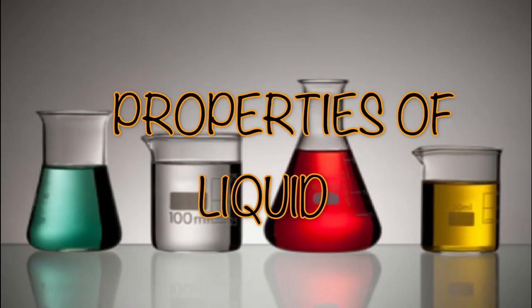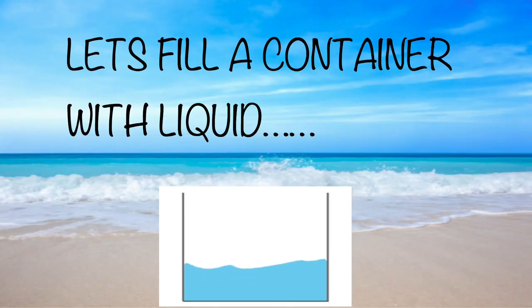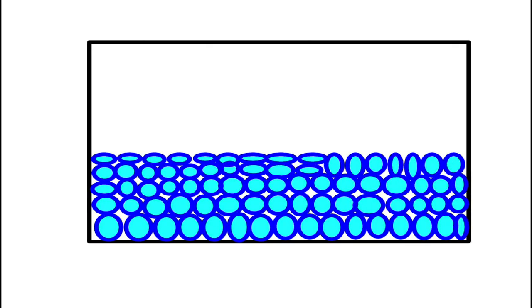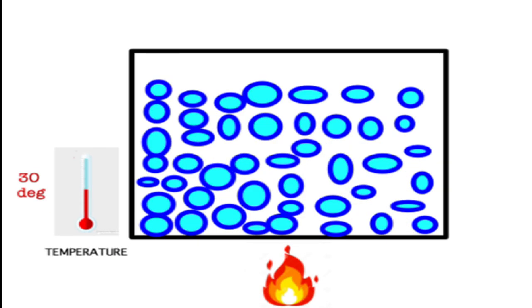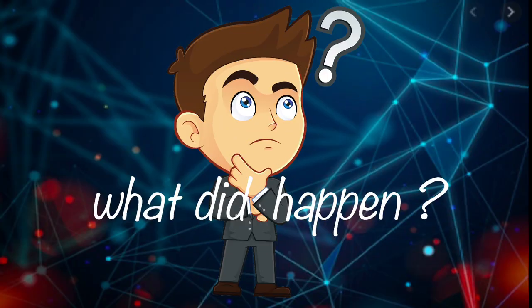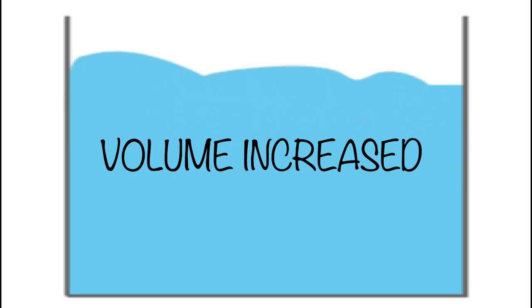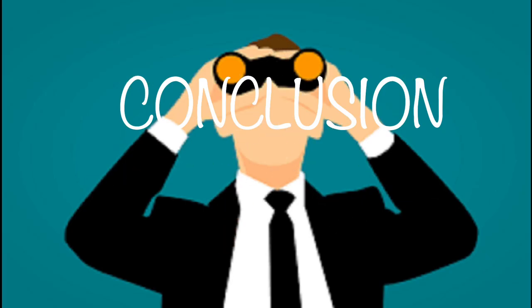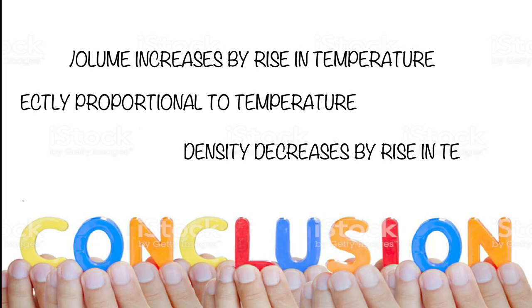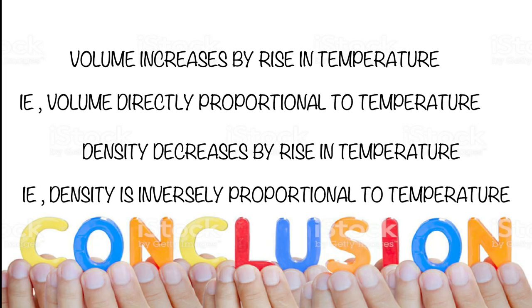Let's look at the properties of liquid. If we fill a container with liquid and heat it up, the volume increases and the density or compactness decreases. The conclusion: volume is directly proportional to temperature, and density is inversely proportional to temperature.